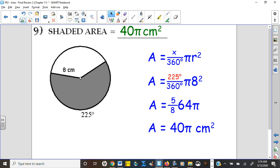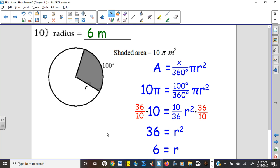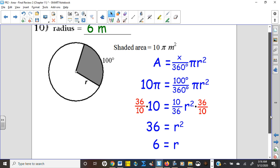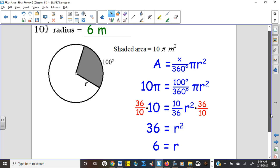And the last problem, number 10, we had another sector, but this time we were working backwards. So we knew the measure of the sector, the arc was 100, and we knew that the area of the shade was 10π. And so we had to first multiply by reciprocals to solve for r² that we could take the square root.